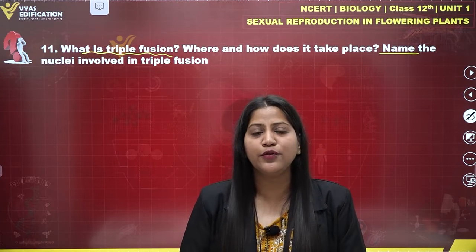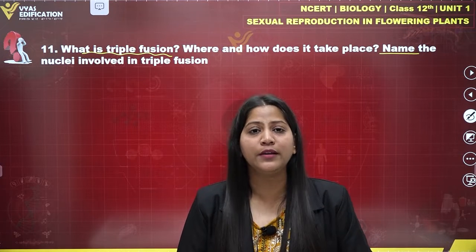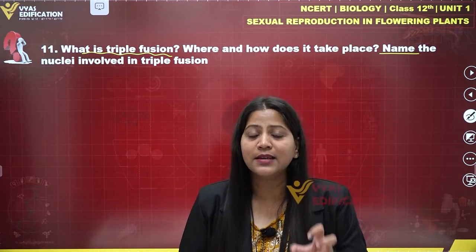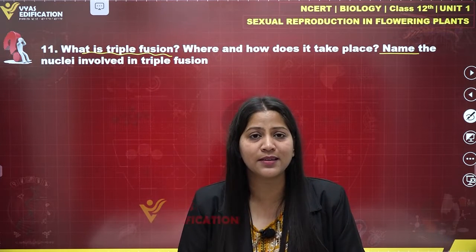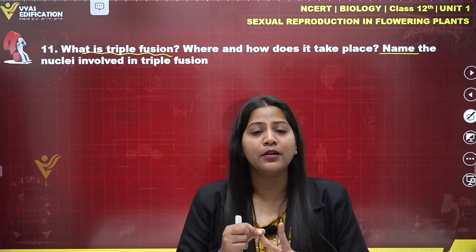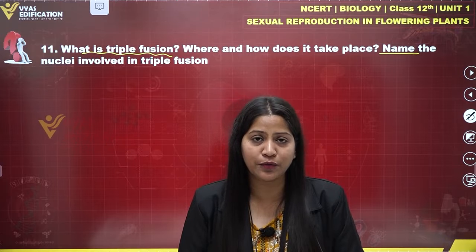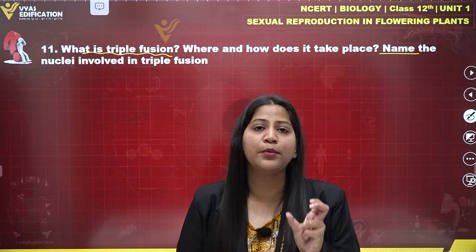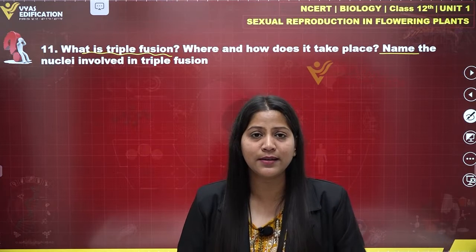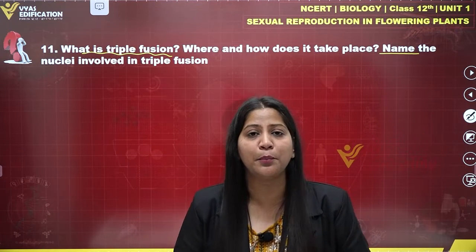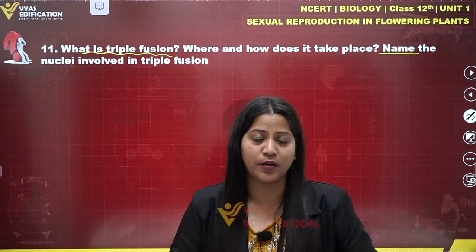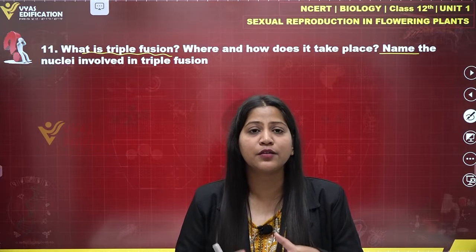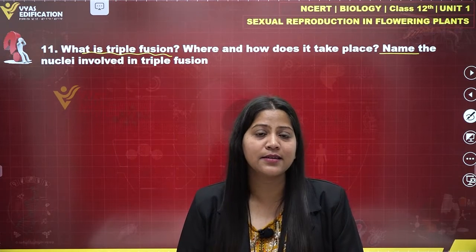Triple fusion is the process of fusion of three haploid nuclei with each other to form a triploid structure. Triple fusion occurs through the fusion of a nucleus from a male gamete and two polar nuclei present in the central cell of a female gametophyte such as the embryo sac. The two polar nuclei fuse to form the secondary nucleus, which then fuses with the nucleus of a male gamete, forming a triploid structure known as the primary endosperm nucleus.